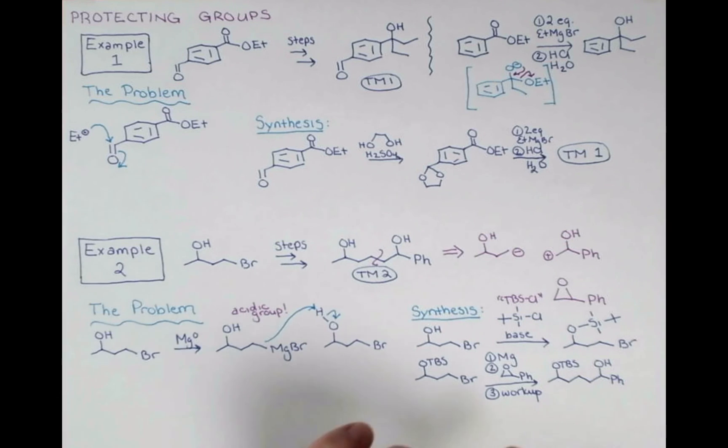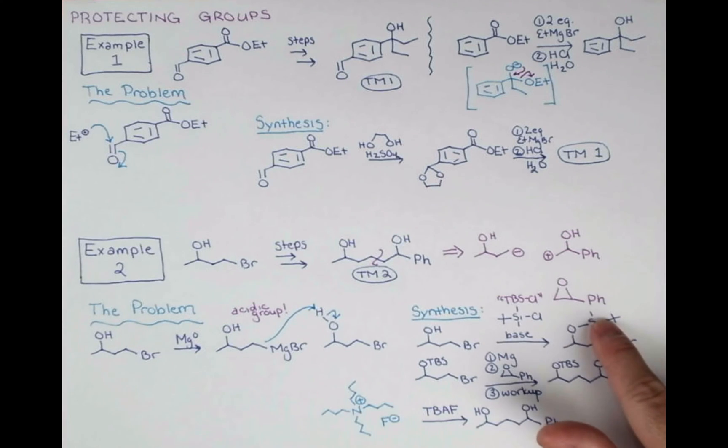However, we're going to say it did not here, and I want to show you the standard conditions for removing a TBS group, which is a fluoride compound called TBAF. This is a fluoride salt tetrabutylammonium fluoride, and it looks like this. So the F- of TBAF comes in, attacks at silicon forming a complex, and then this group is removed from the molecule.